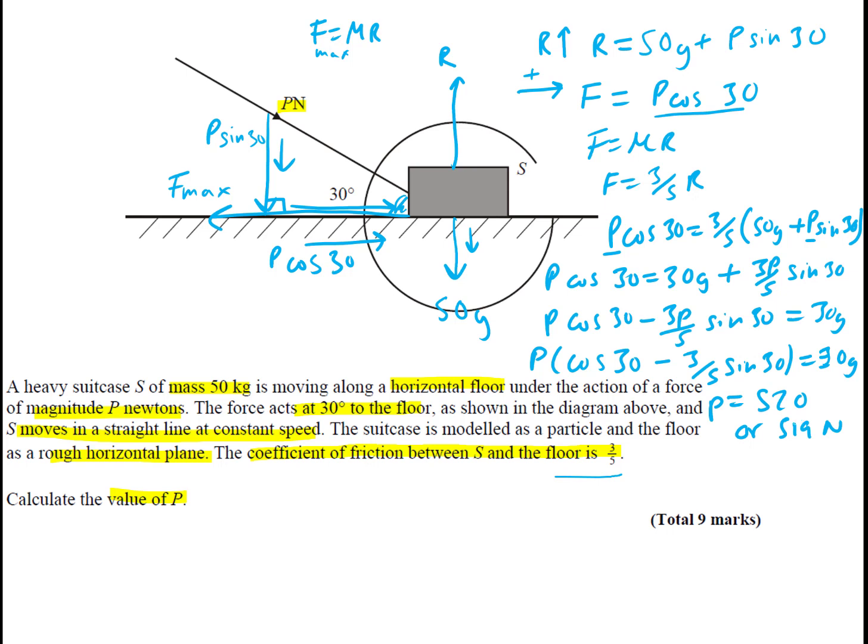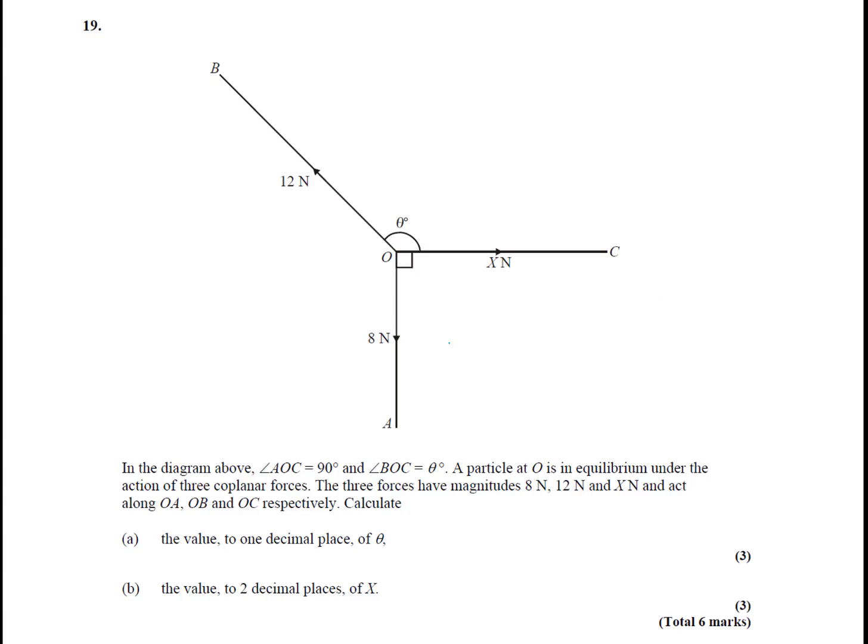And that's your 9 marks. So that is doable once you pick up the skill. So all we're doing is resolving across and up and down. And these ones are quite nice. Now let's have a look at this question. We have a particle O, and it's in equilibrium under these three coplanar forces. They have these magnitudes and act along OA, OB and OC respectively.